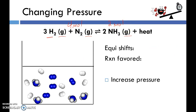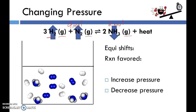If we decrease the pressure, we've given the molecules more space and the system wants to use up that space. It will favor the reactant side because that has more moles of gas. Decreasing pressure shifts the equilibrium to the left, favoring the reverse reaction — we shift toward the side with more moles of gas. Anytime you change pressure, pay attention to the number of moles of gas on each side of the equation.